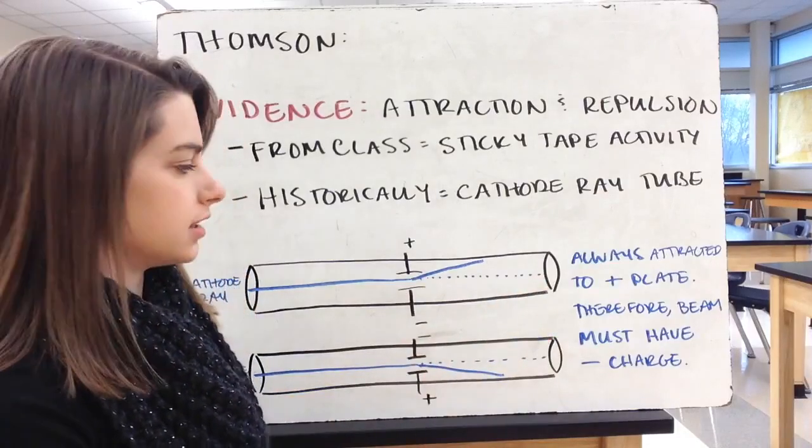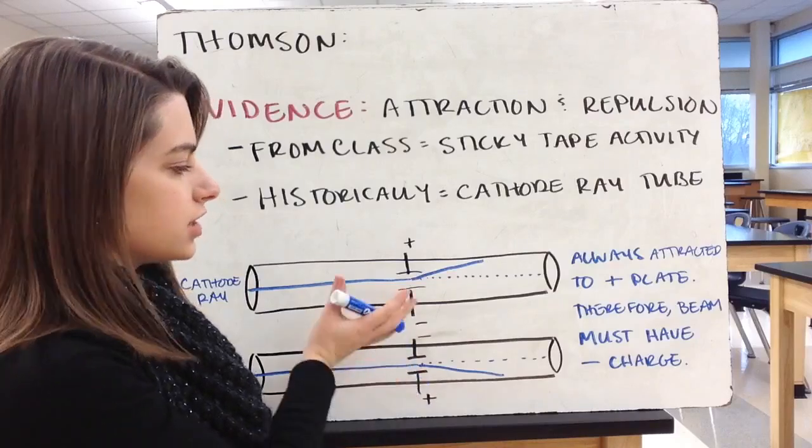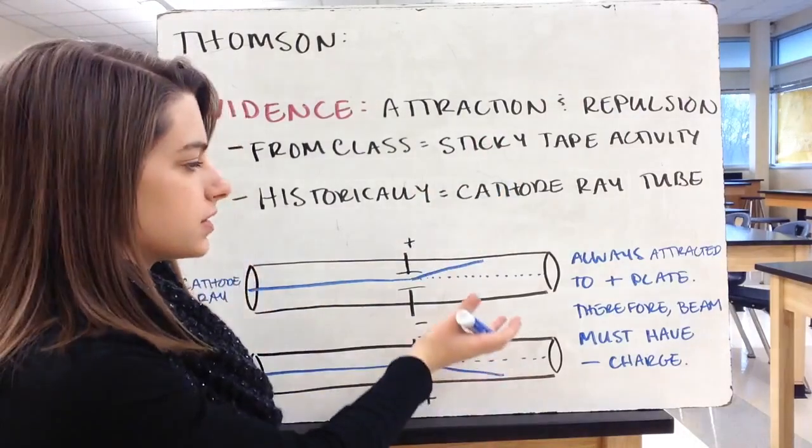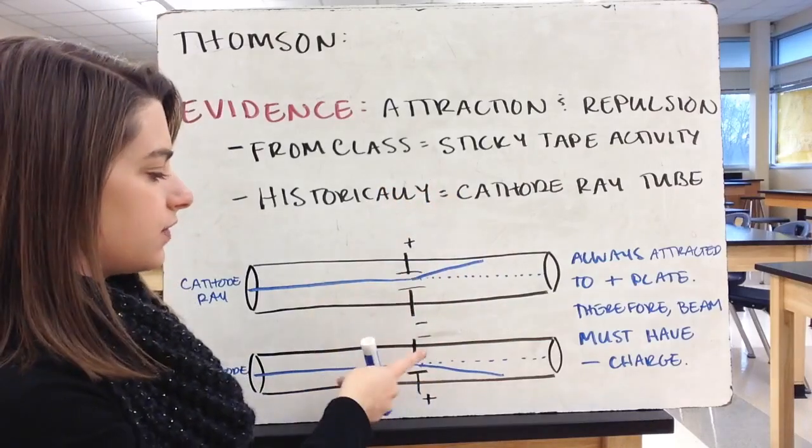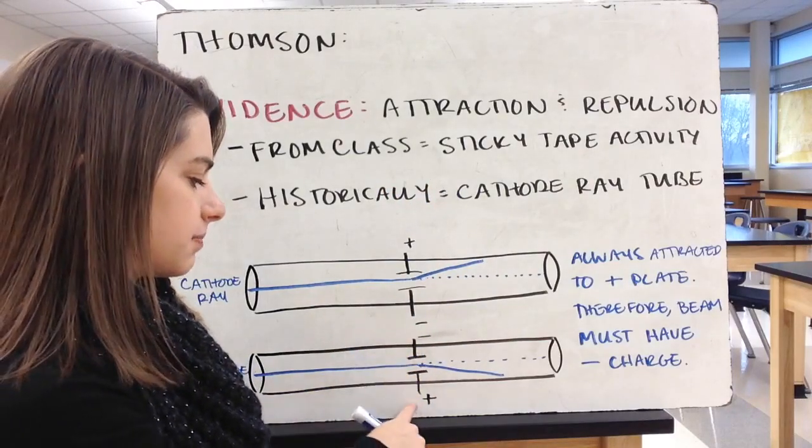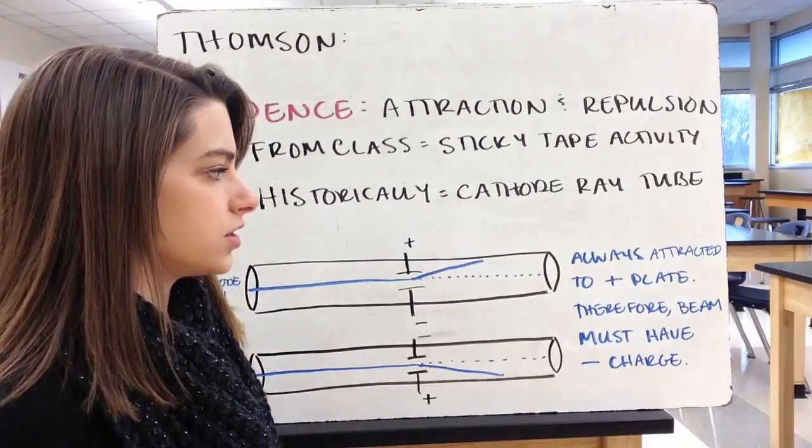When he applied a positive charge to one plate and a negative charge to the other, he saw that the beam bent when it hit those plates, and it bent towards the positive side. If he reversed the charges, flipped them the other way, so the top plate was negative and the bottom plate was positive, the beam still bent towards the positive side of the tube.